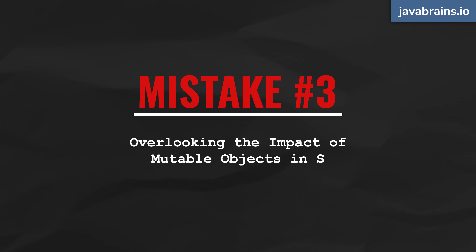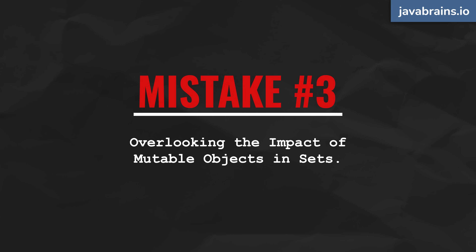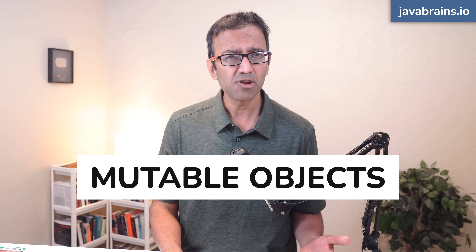Moving on to mistake number three: overlooking the impact of mutable objects in a set. When we work with sets in Java, there is one important aspect that's often overlooked — the impact of using mutable objects. Mutable objects are objects whose state or values can be changed after they are created. You might think any Java object's properties can be changed via setters, but the big deal is if certain values are changed for instances when they are in a set — this can lead to pretty unpredictable behavior.